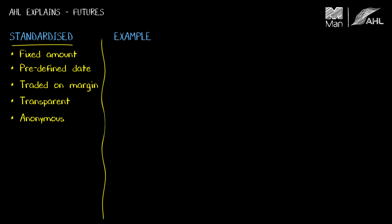Let's have a look at an example. The example I'm going to choose is the gold futures contract traded on COMEX, which is part of the New York Mercantile Exchange. The first thing to note is the fixed amount of gold this contract refers to — it's 100 troy ounces. So one contract gives us the investment exposure of the value of 100 ounces of gold.